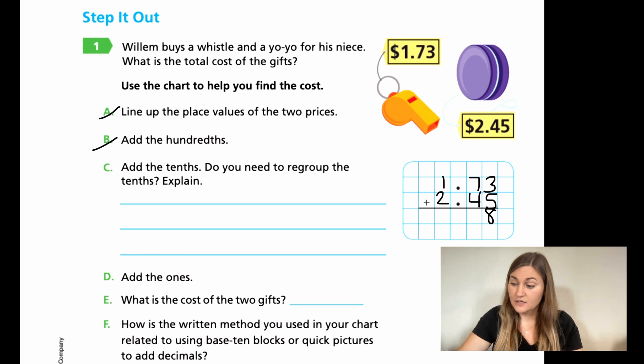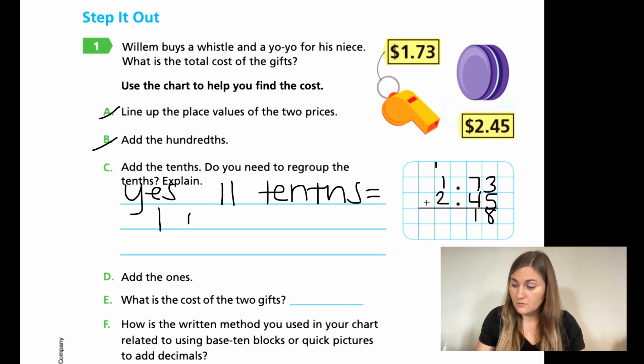Now for C, it says add the tenths. Do you need to regroup the tenths? Explain. So I have 7 plus 4. 7 plus 4 is 11. So yes, of course, we are going to have to regroup. So I'm going to drop the 1 down here and just carry over my 1 past the decimal to the next group of numbers. So I'm just going to put yes, and that's because I end up having 11 tenths. So that is going to regroup to equal out 1 ones and 1 tenths. Because 10 of those tenths, 10 tenths, would be one whole. C done.